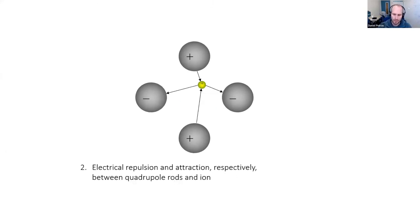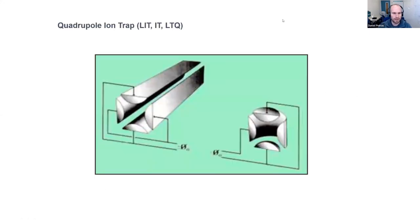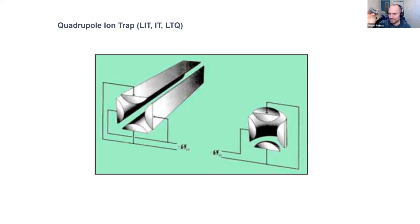The quadrupole can also be used as a trap by putting a potential at the front and end of the quadrupole — then you can not only filter ions but store them. This is a linear ion trap with four quadrupole rods taken out of an old LTQ mass spec from Thermo. The quadrupole is segmented so you can change the field at the entry and exit, using it for both separation and trapping. This also exists in a donut-shaped type of electrode — a 3D ion trap.